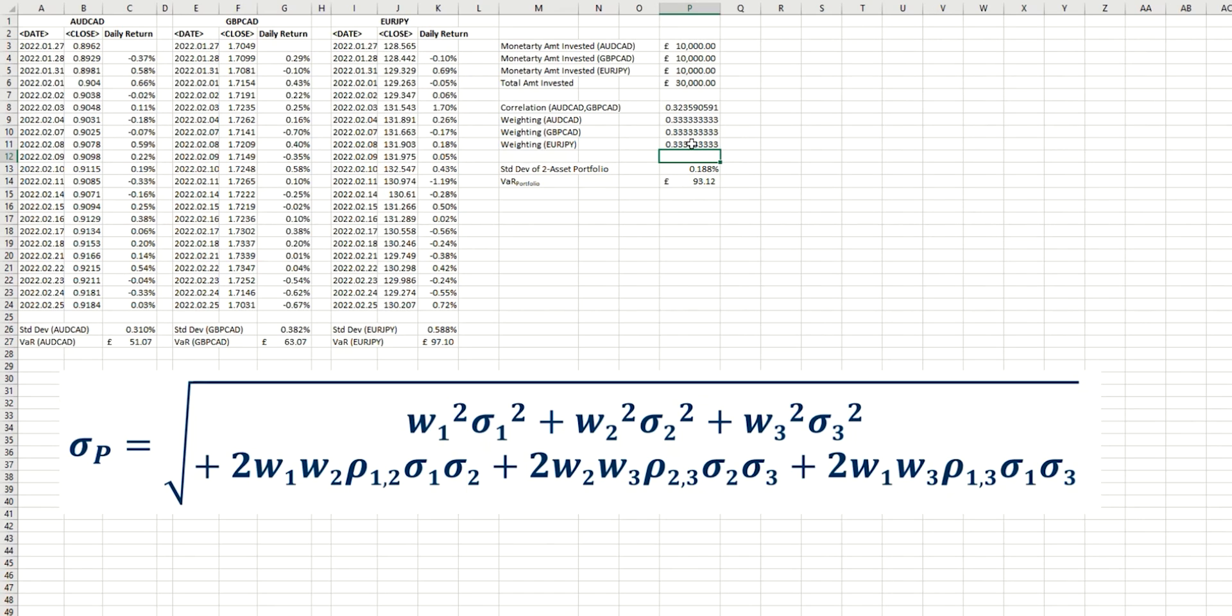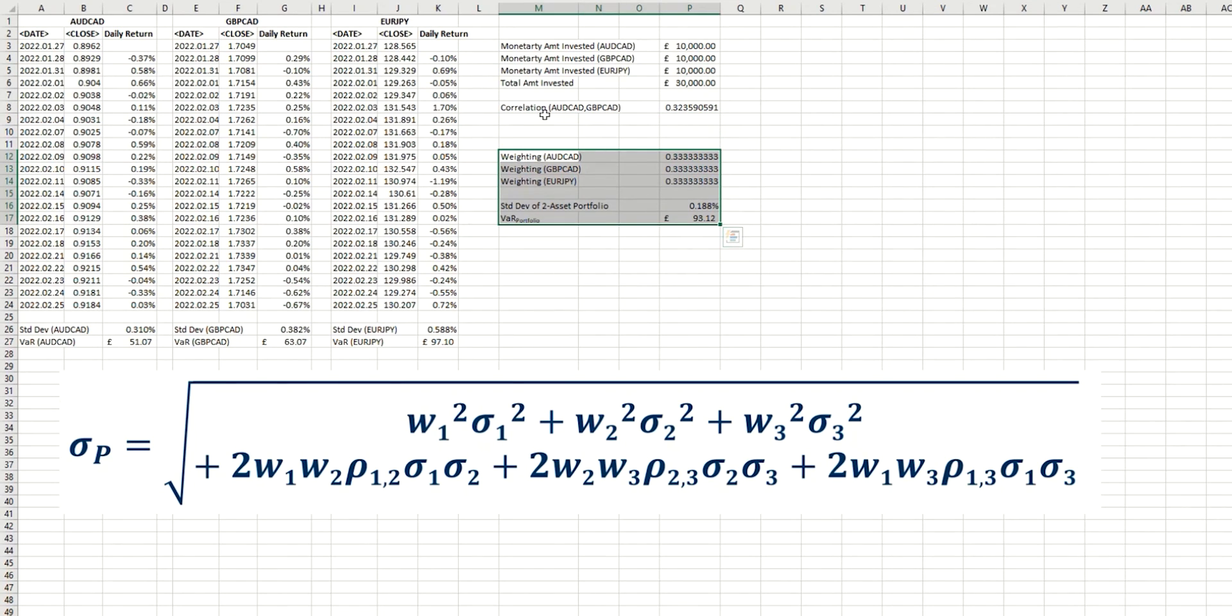Now, in the previous calculation, we only needed to calculate one correlation coefficient. And that was the coefficient between the two positions that we had. But if you remember, in the previous episode, with three positions, there are actually three correlation coefficients that we need to calculate. So I'm just going to cut these values here so that I can add those correlation coefficients below the one we did last time.